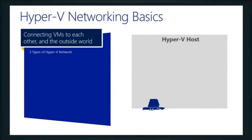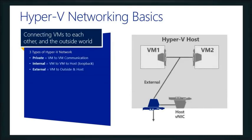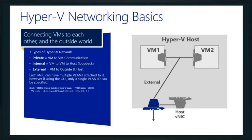Let's switch gears and talk about some of the Hyper-V networking basics. There are three main types of networks inside our Hyper-V-based switches: private, which allows VM-to-VM communication; internal, which allows VM-to-VM and host communication — basically a host loopback; and external, which allows the virtual machine to access the outside world. You can even assign them VLANs, though in the GUI you can only assign a single VLAN ID. Using PowerShell, you can assign multiple VLANs to those VNICs.